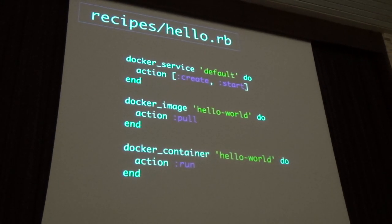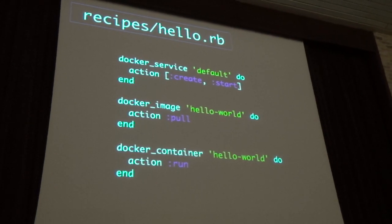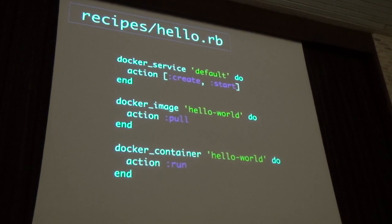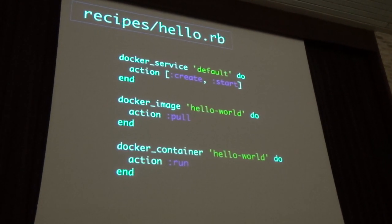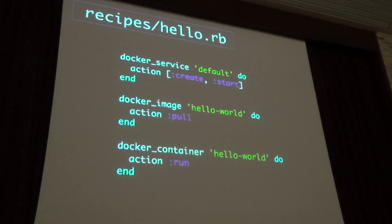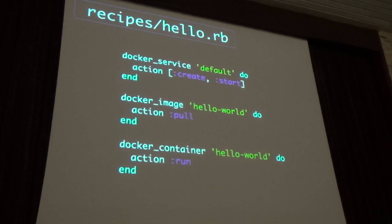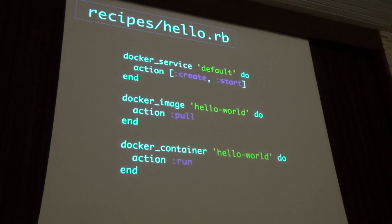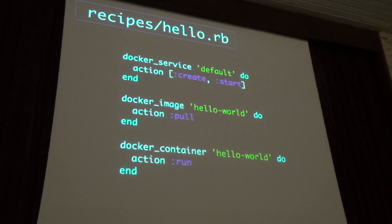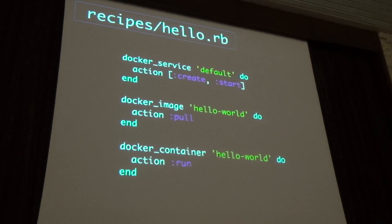You need to have a Docker daemon running on your machine. You can talk to remote Docker hosts — a swarm, whatever — but if you need to set one up locally, use the Docker service resource. Docker image tests and repairs — it pulls the hello-world container from Docker Hub and runs it. The equivalent Docker commands would be 'docker pull hello-world' and 'docker run hello-world'. It tests and repairs every time — that's a recipe right there.